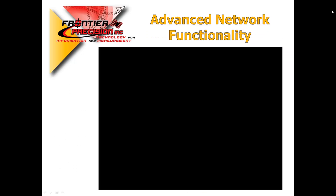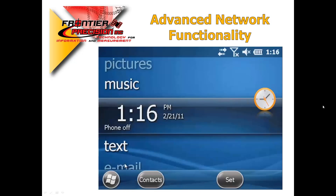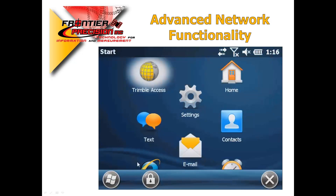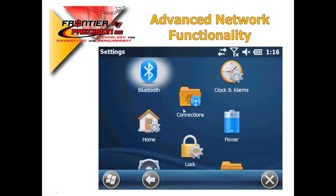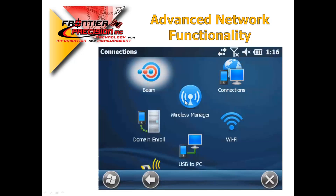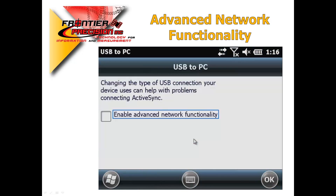Let's take a look at how we can change this setting in our device. First, on your device, open up the Windows Start menu and locate the Settings icon. In Settings, choose Connections and choose USB to PC. Changing the type of connection your device uses can help with problems connecting to ActiveSync. Based on your desired settings, either check the Network Functionality box and hit OK, or uncheck the box and hit OK to save the changes.